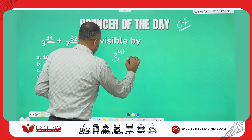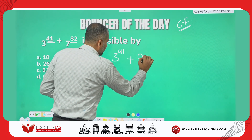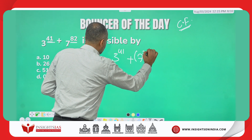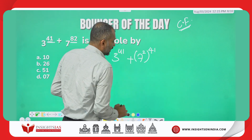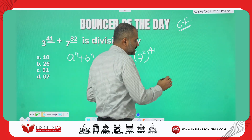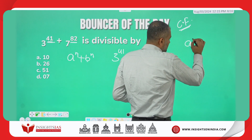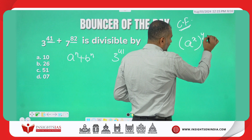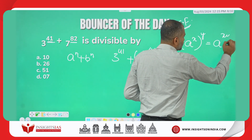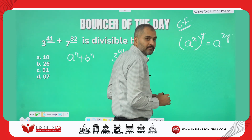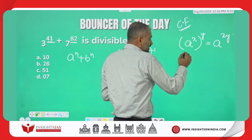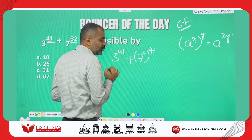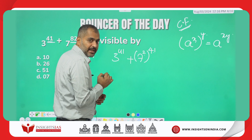So what I will do is write 3^41 + (7²)^41. Remember: a^x whole raised to the power y equals a^(xy), so x and y get multiplied — 41 × 2 = 82. This rewrites the expression correctly.